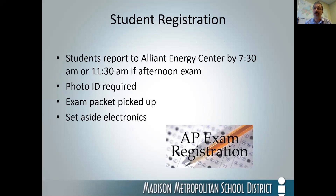Morning of the examination, students will be reporting to the Alliant Energy Center by 7:30 a.m., or 11:30 a.m. if they have an afternoon exam. The location of the registration table and the exams is just outside of Room D — as in Dog — which is to the far left end of the complex as you're facing the Alliant Energy Center. Parking is free. Students are required to have a photo ID, and they pick up their answer document and AP documentation. Cell phones, smart watches, or any electronics should be put aside prior to the exam.